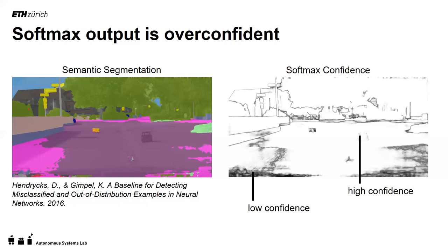To clarify: in the visualizations, white represents high confidence or low uncertainty, and darker regions mean low confidence or high uncertainty. We can see in this example that the softmax is overconfident on regions where the system is just missing objects in front of the car.